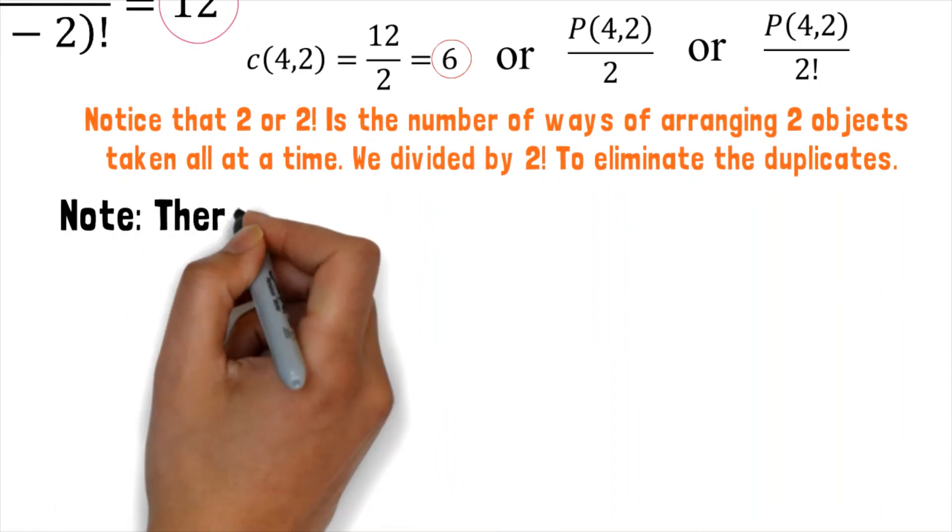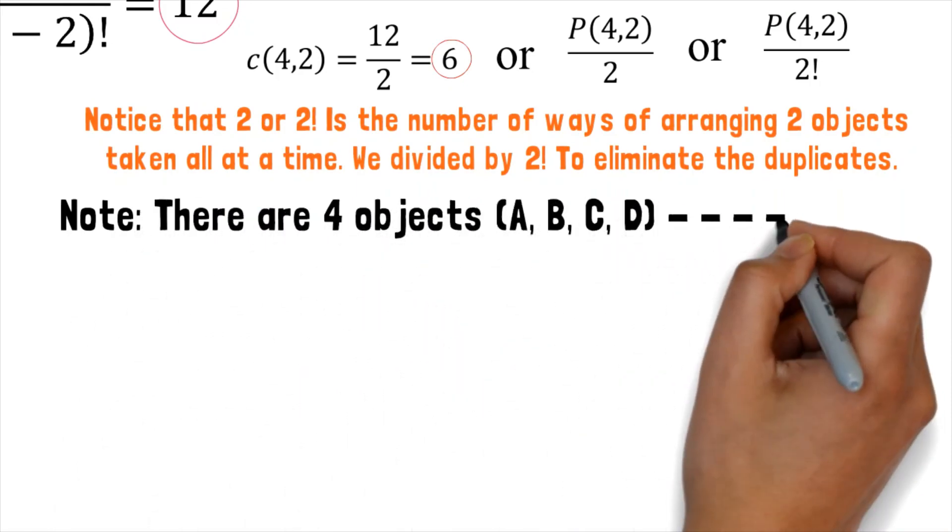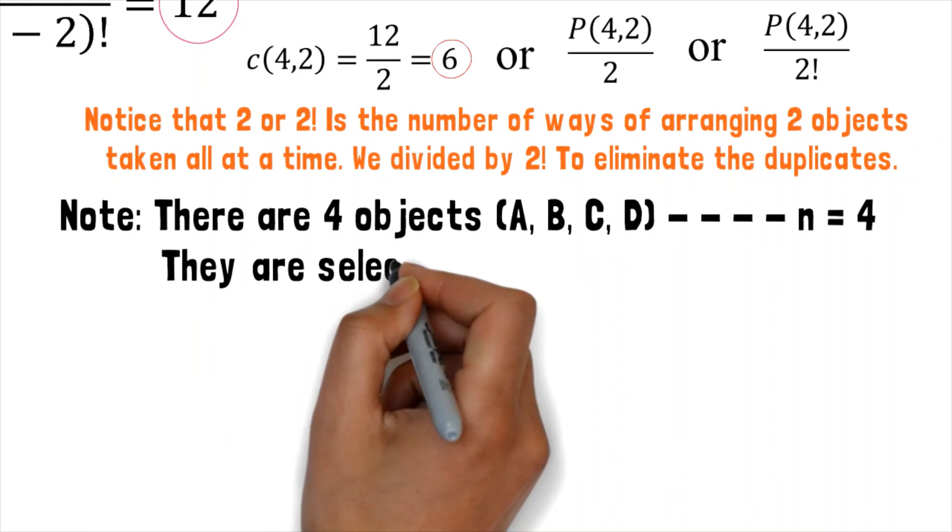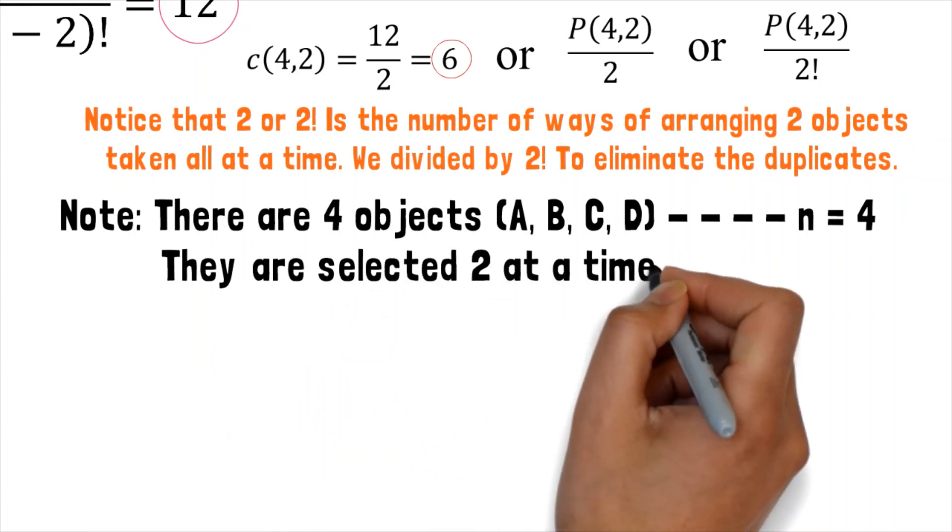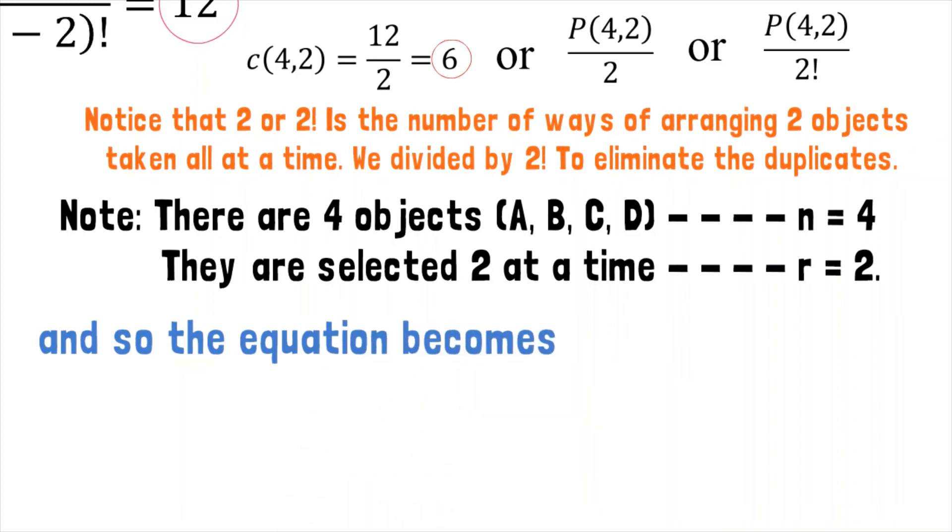Note that there are 4 objects A, B, C and D. That's why our N equals 4. They are selected 2 at a time so our R equals 2. And so the equation becomes C(n,r) equals P(n,r) divided by r factorial.